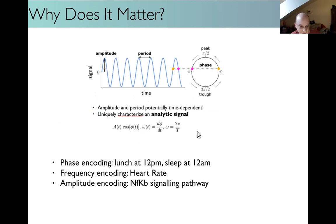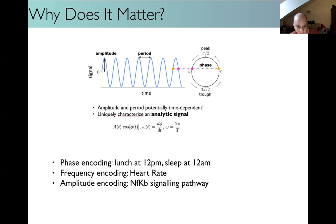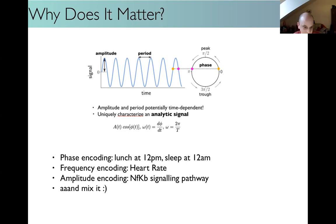Why does it matter? There are three main reasons. Phase encoding - people in Singapore, LA, or Berlin all have the same 24-hour period, but their phases are different; when I have lunch, the other one sleeps. Where you are in your oscillation is very important in biology, especially circadian rhythms. Frequency encoding is equally important - for heart rate, it's not critical where you are in a specific heart cycle, but how fast your heart beats is important. For amplitude encoding, NF-κB signaling, the inflammatory response pathway, shows oscillations with strong amplitude gradients. And of course you can mix all three, almost like an alphabet.